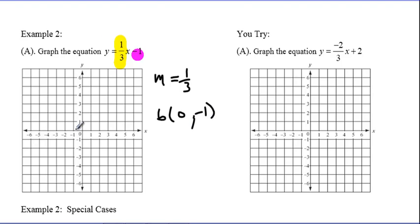So that means I'm going to start at negative 1, 0, negative 1. And I'm going to go from there, up 1 to the right 3. Up 1, right 3. Up 1 to the right 3. So again, if I want to put more points on, the opposite of going up 1, right 3 will be down 1, left 3. Down 1, left 3.